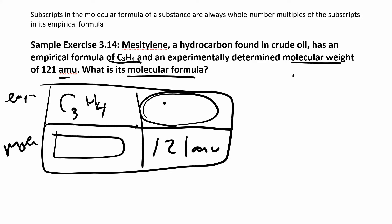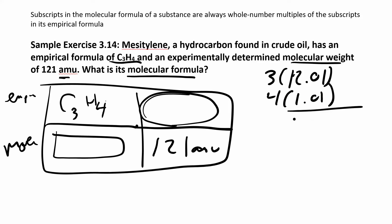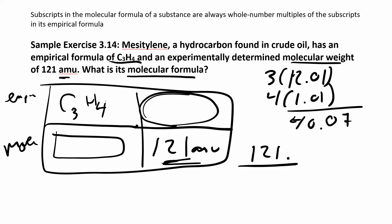They give us the molecular weight of the molecular formula and say it's 121 atomic mass units. We can figure out the empirical formula weight: we have three carbons each at 12.01, and four hydrogens each at 1.01, which gives us about 40.07. So now we need to figure out how many of these units we have in the molecular formula. We take the ratio: 121 divided by 40.07 gives us about 3.